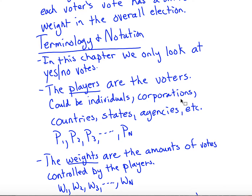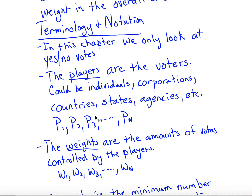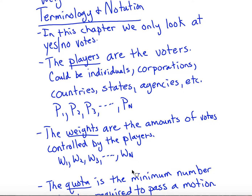Because players can be all these different things, we usually denote them as player one, player two, player three, all the way through player n — however many players you have. Each player has a certain number of votes that they control, and that's what we call the weights. So player one has weight one, player two has weight two, player three weight three, and so forth.